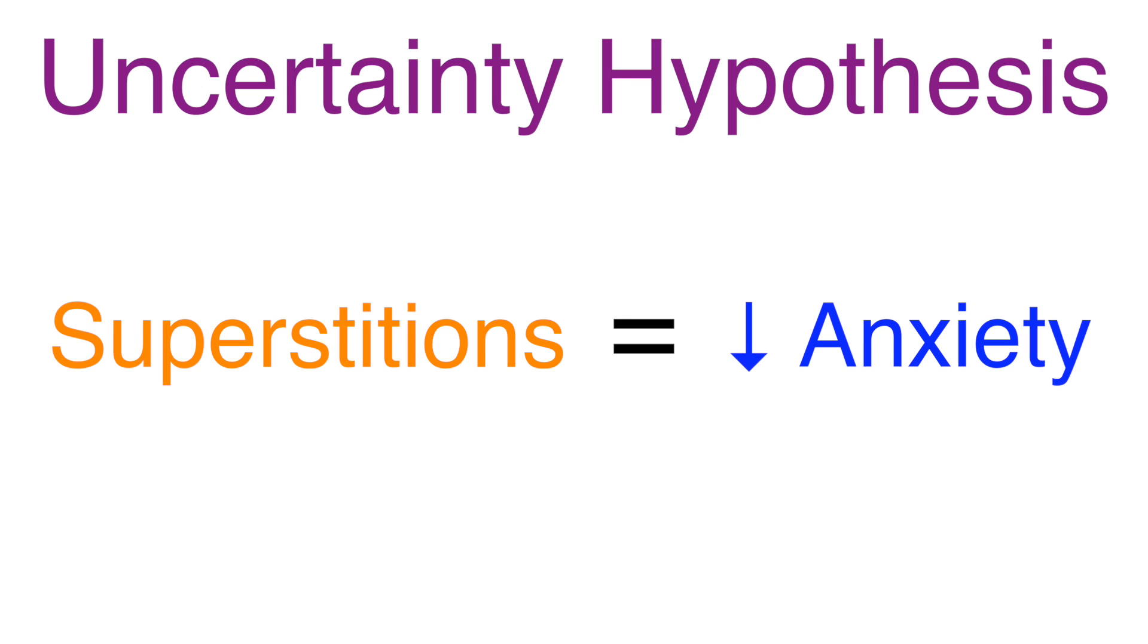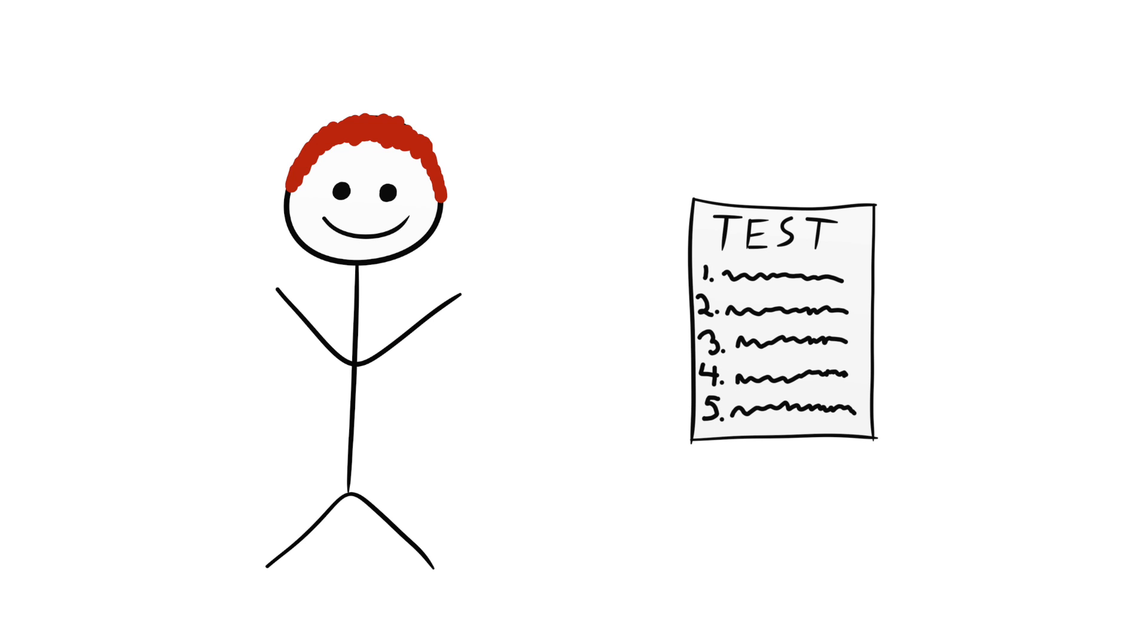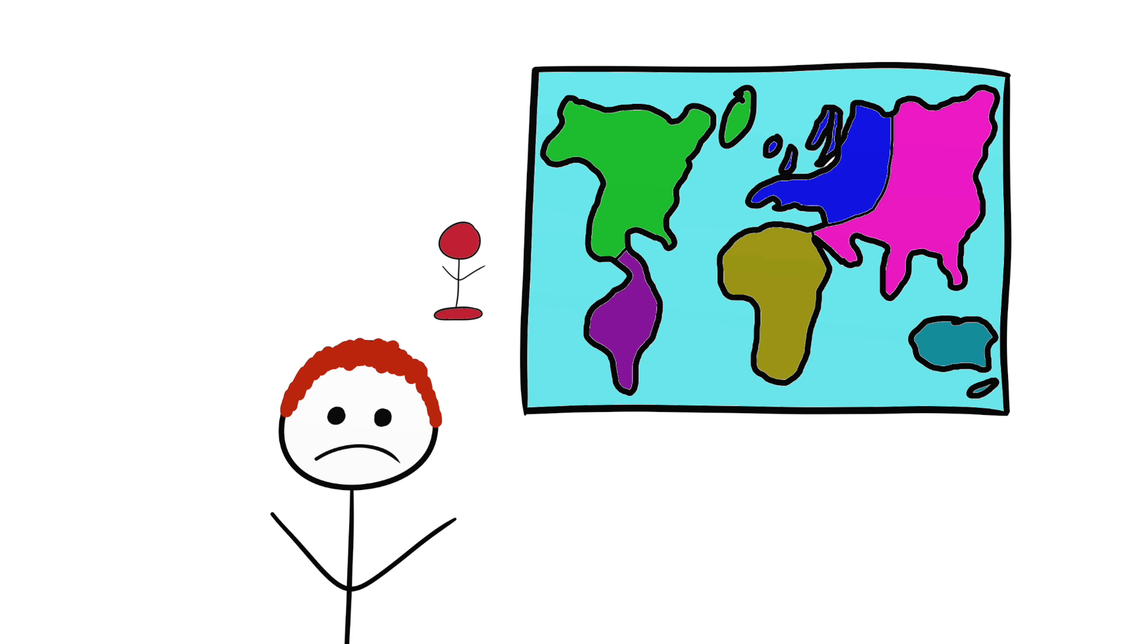One can see how superstitions themselves can have a little bit of a causal role in an event in this case. If you're about to go into a test and you realize you don't have your watch, you might psych yourself out and become anxious, which could lead to a bad performance on the test. Or if you aren't the green color in a game of risk, you might lose confidence in your decisions and end up making mistakes you would never make if you were in the right mindset.